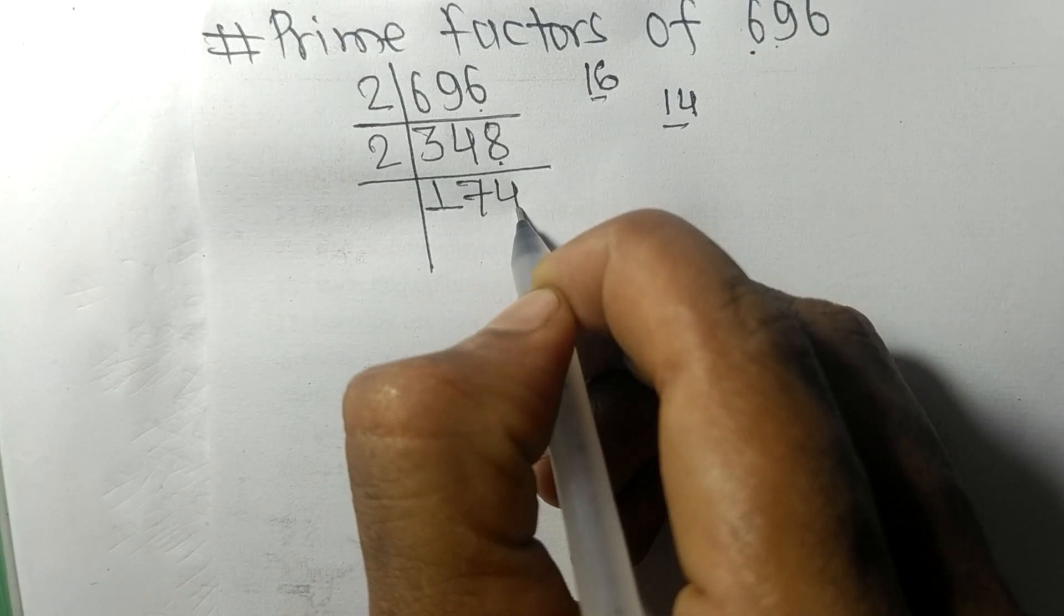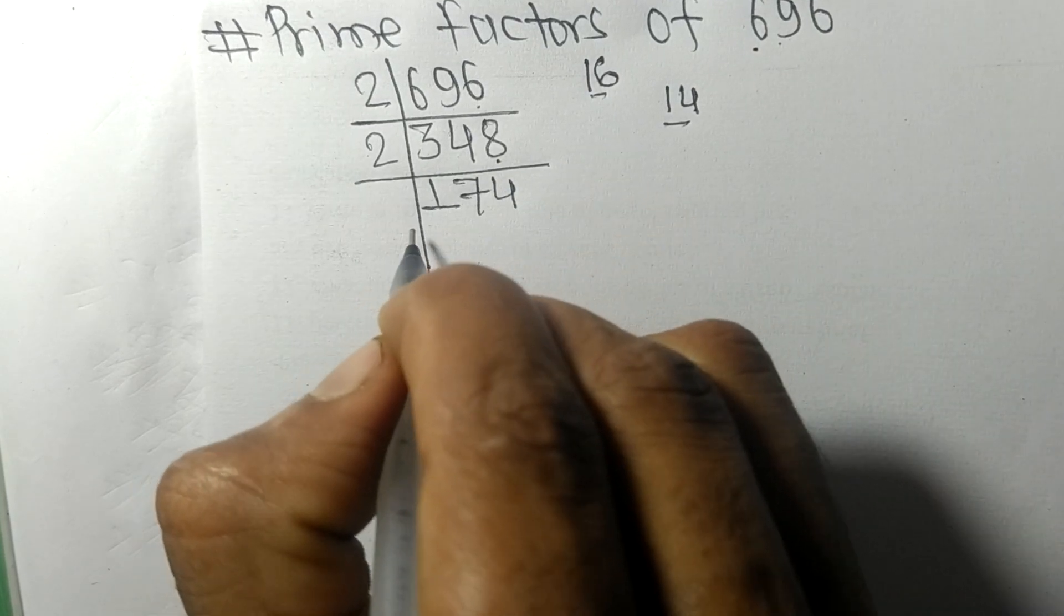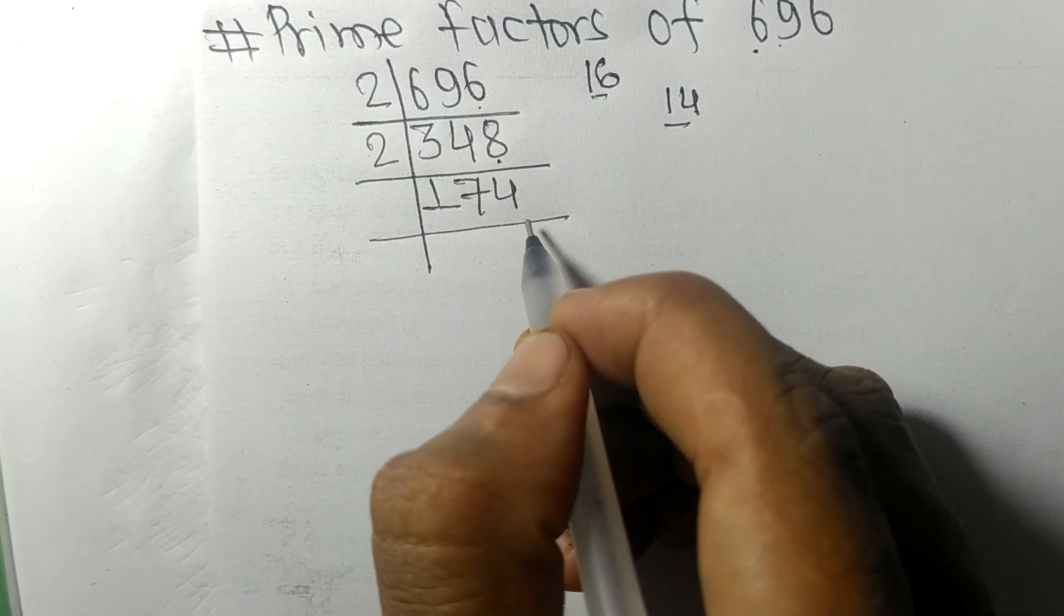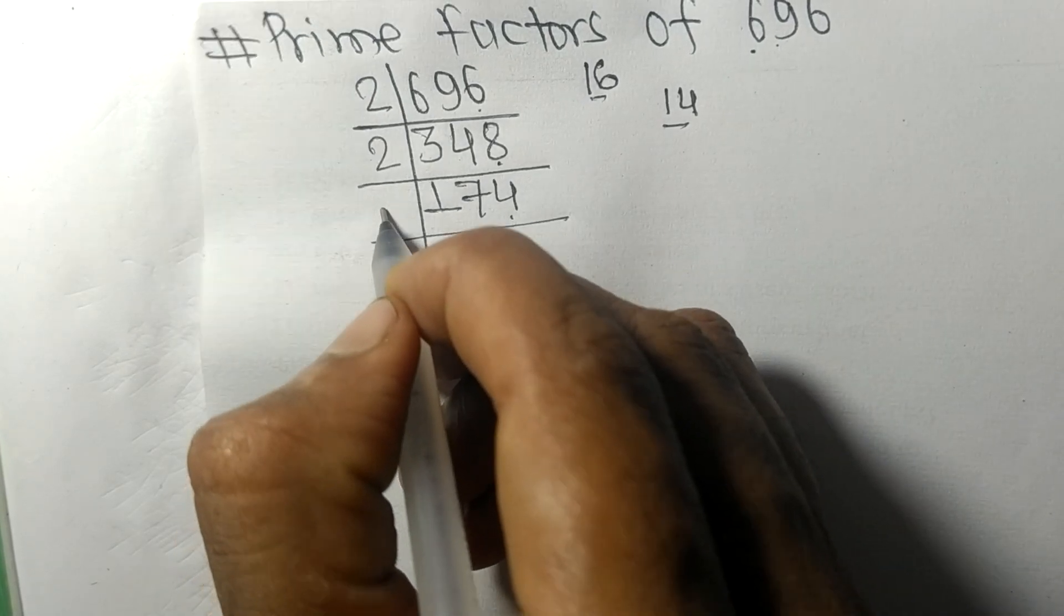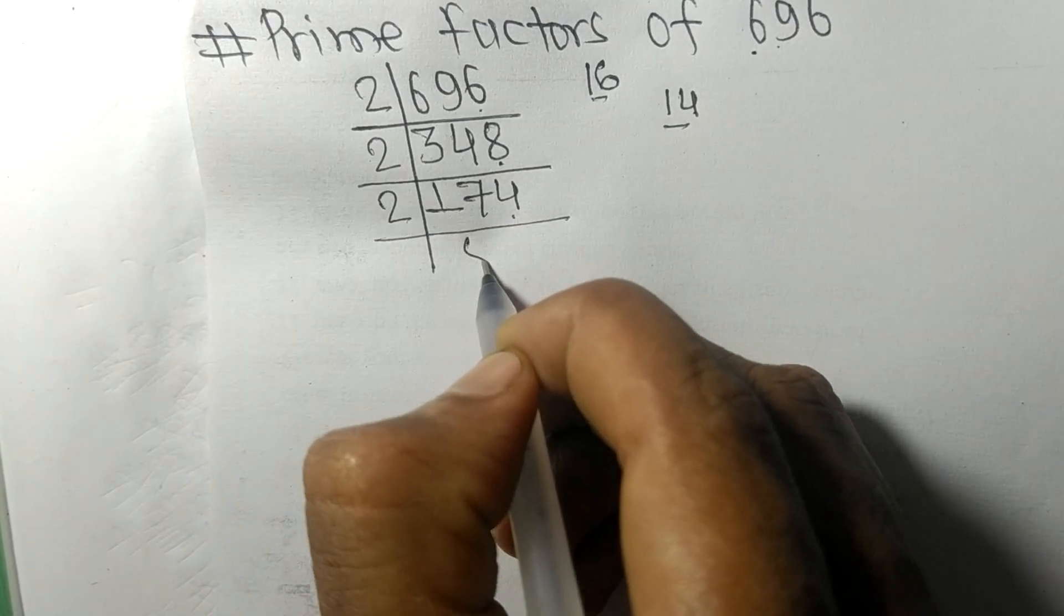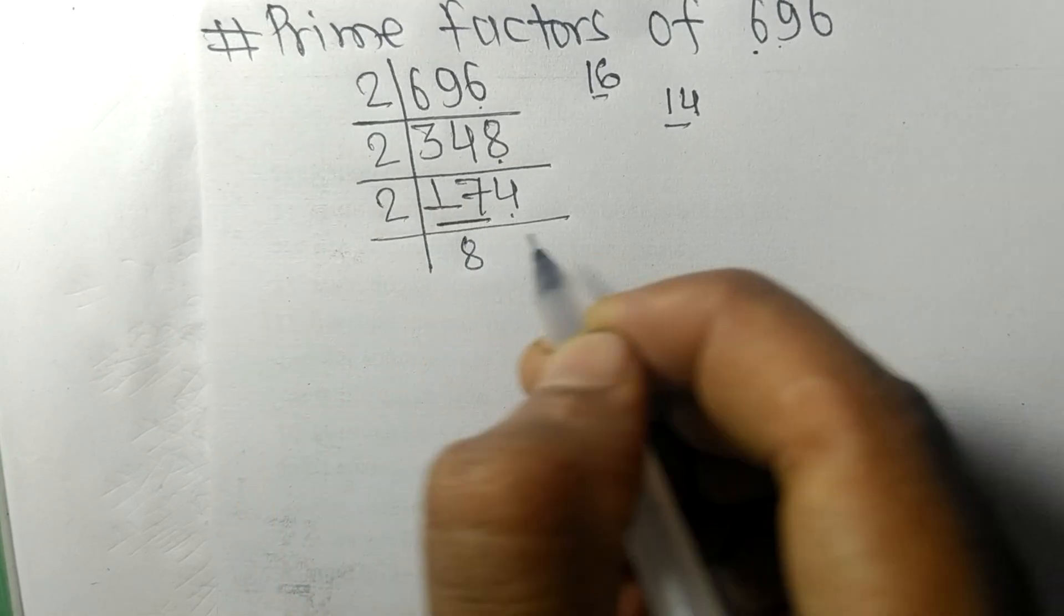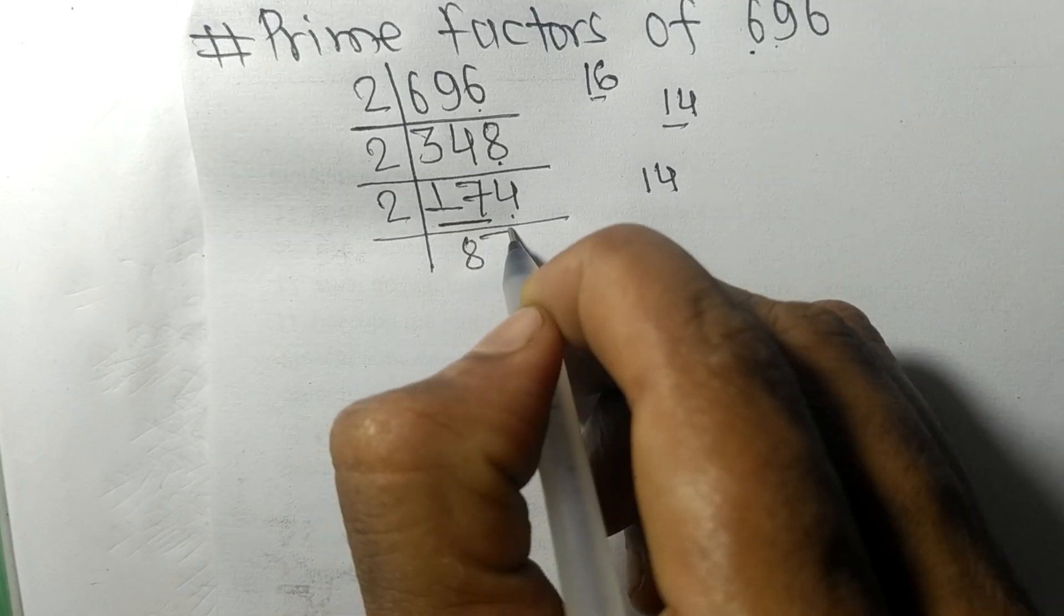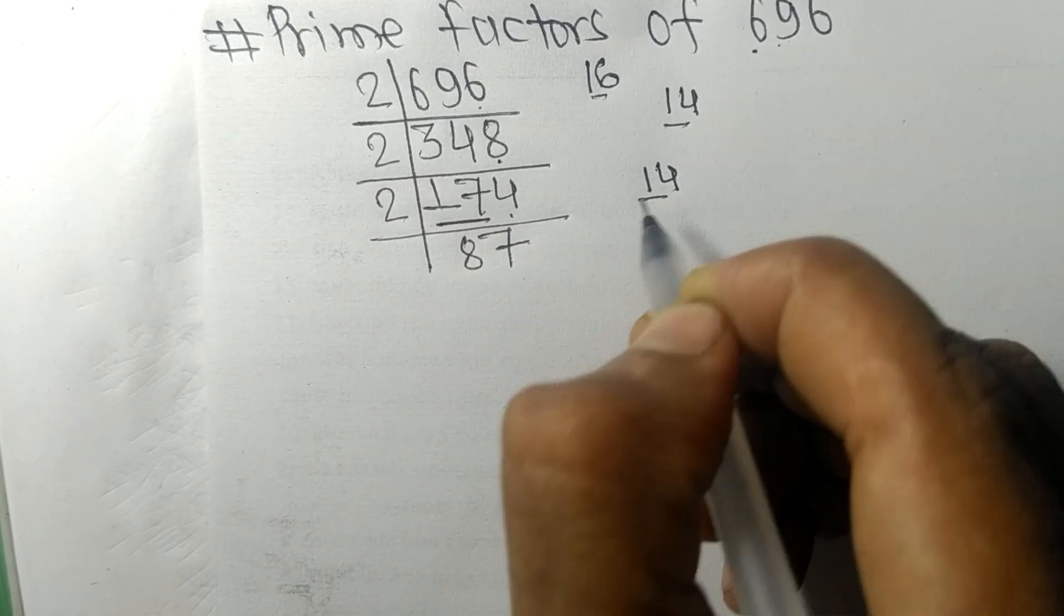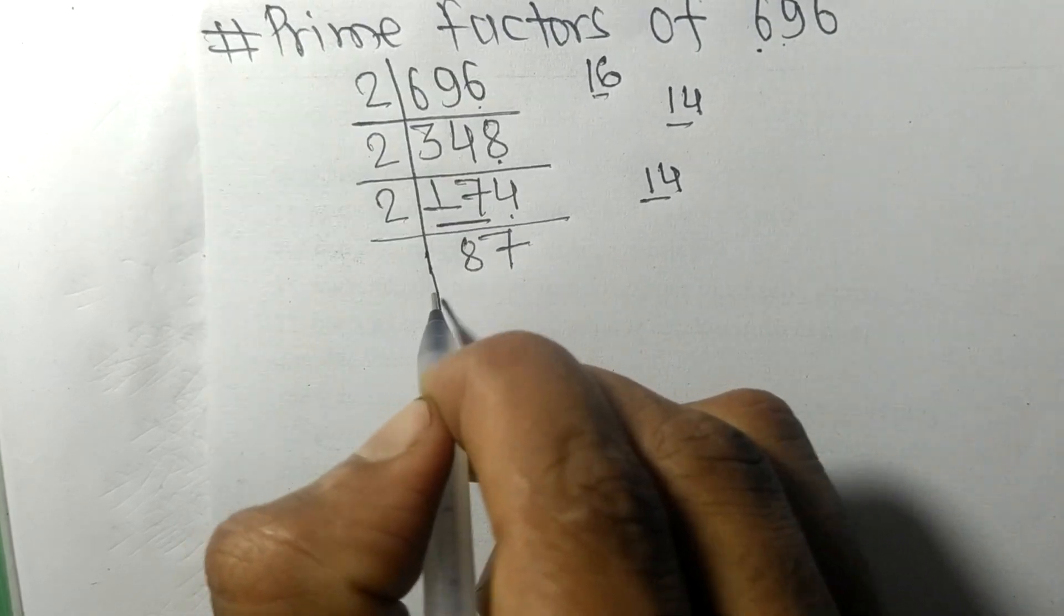Again we have an even number 4 at last, so it is divisible by 2. 2 times 8 equals 16 remainder 1 and 4, 14, 2 times 7 equals 14. So now we got 87.